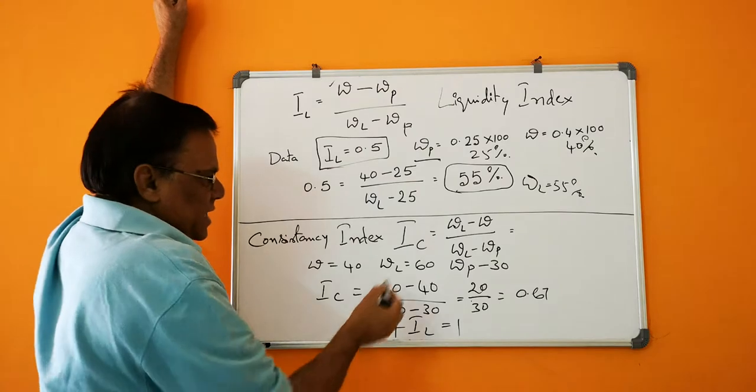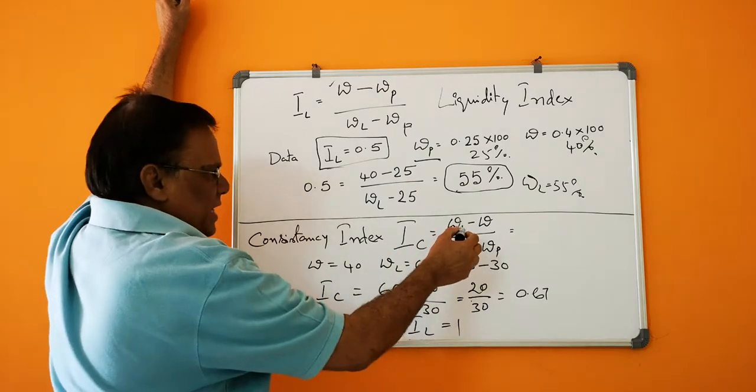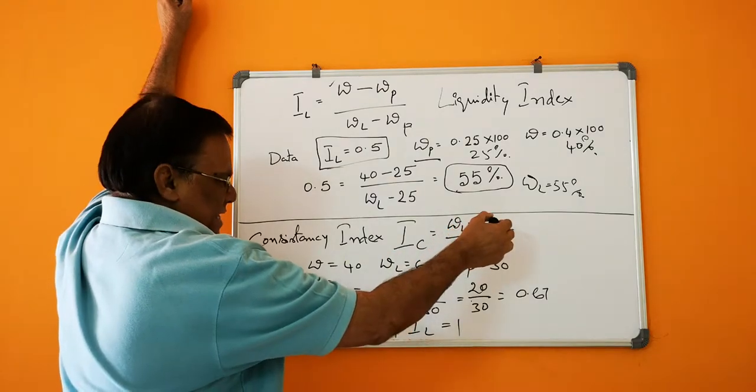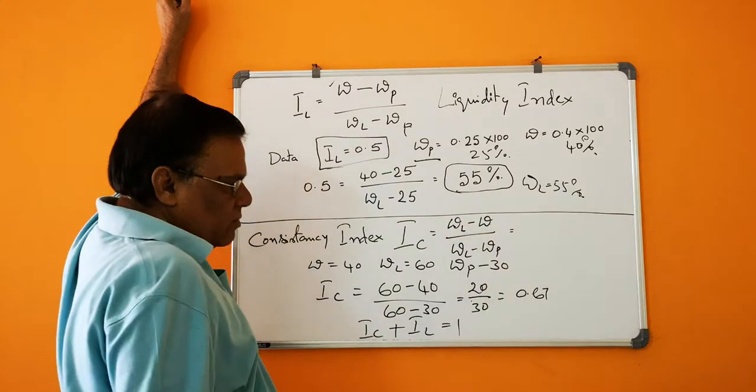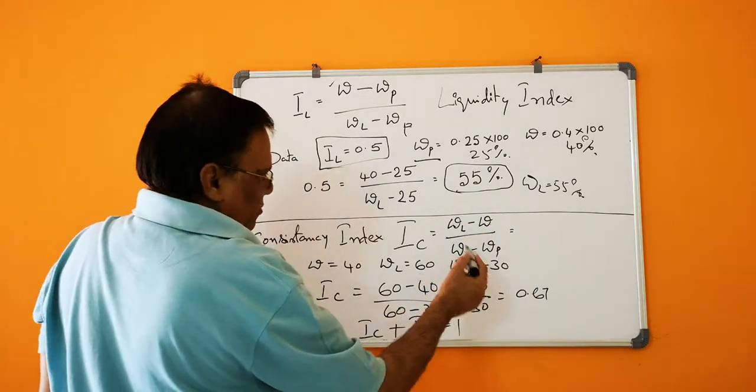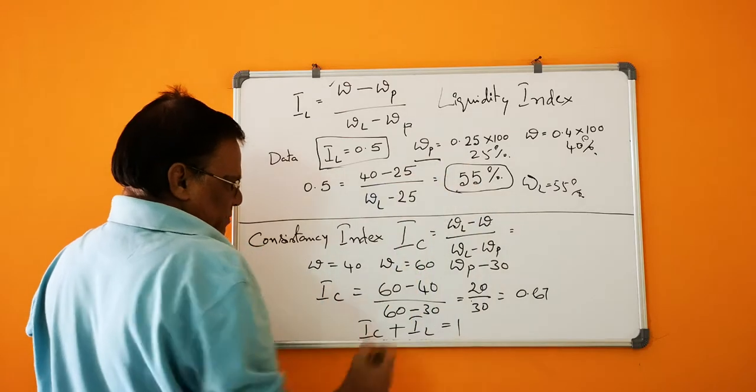Consistency index IC is given as liquid limit minus natural water content or water content, divided by liquid limit minus plastic limit.